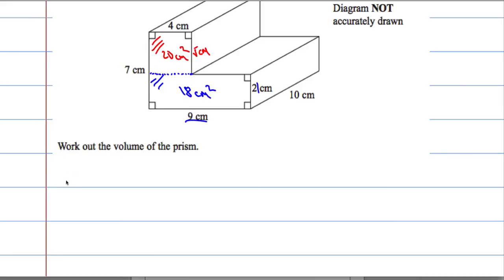So, the area of the cross-section equals 20 plus 18. 20 centimeters squared plus 18 centimeters squared, which is going to give me 38 centimeters squared.